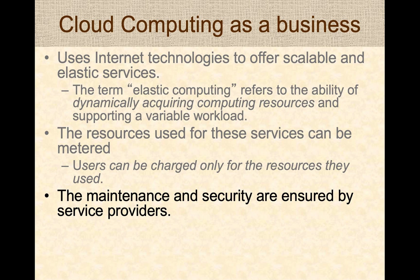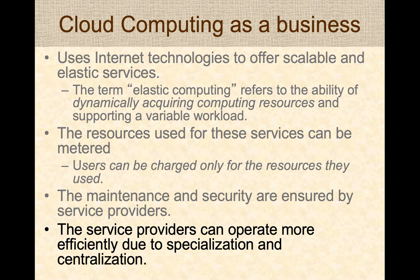Maintenance, security, and all services are provided by the service provider — Amazon or Google maintain the machines and provide security, while users just run software on hardware managed by someone else. Service providers like Google and Amazon operate more efficiently due to specialization, centralization of resources, and custom software and hardware.